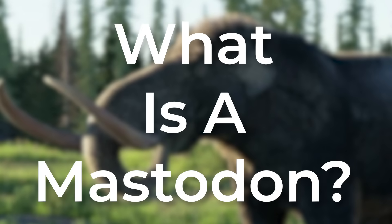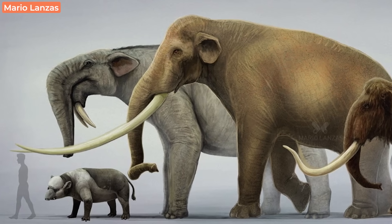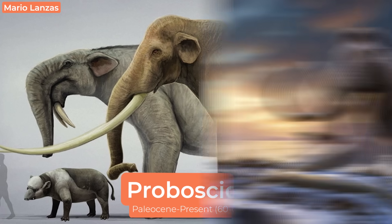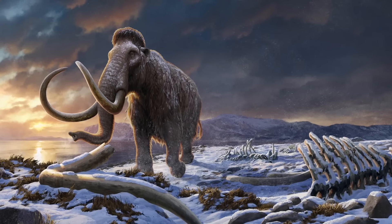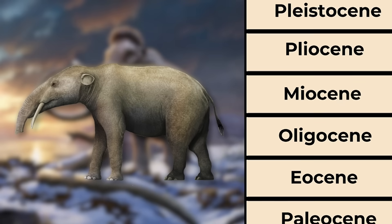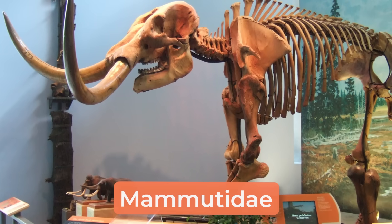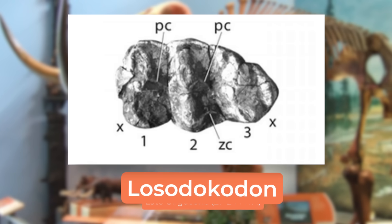So what is a Mastodon? Just like mammoths, these guys fall under the order Proboscidea. And while the title describes these as Ice Age creatures, which many of them were, the group leading to Mastodons branched off as early as around 27 to 28 million years ago during the late Oligocene. The earliest known member of Mammutidae, the family to which all Mastodons belong, is Losodocodon from Kenya.